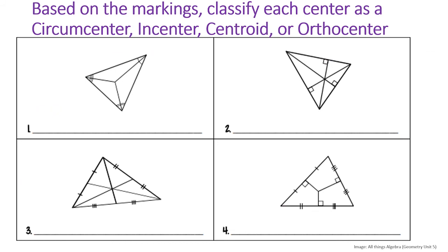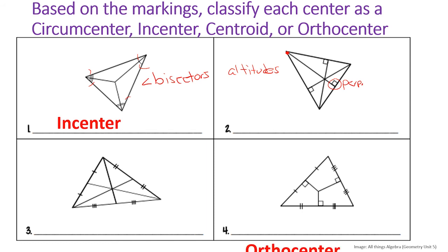Now, based on the markings, let's classify each center as circumcenter, incenter, centroid, or orthocenter. In the first triangle, we have congruent angle marks at each vertex, making these angle bisectors — so the point of concurrency is the incenter. In the next triangle, lines go from a vertex to the opposite side and are perpendicular, making them altitudes — so the point of concurrency is the orthocenter.